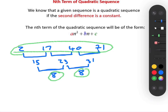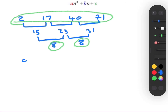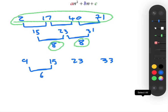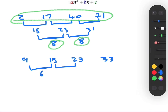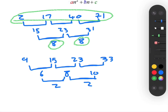Let's move to the next example and see if the sequence is quadratic. Let's say we have 9, 15, 23, and 33. The first differences are: 9 and 15 gives 6, 15 and 23 gives 8, 23 and 33 gives 10. The second difference is 2 and then again 2, so beyond reasonable doubt this sequence is quadratic because the second difference is a constant.